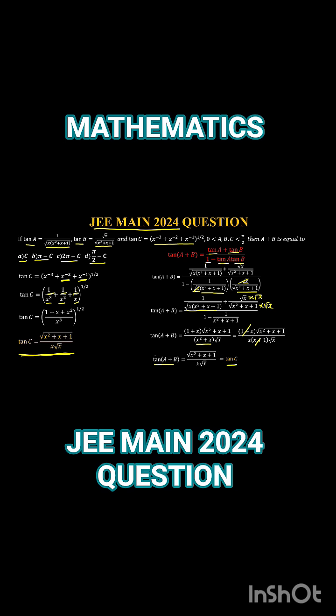Since tan(A + B) = tan C, we get A + B = C + nπ. Here, n = 0 is the only value that satisfies the condition that A, B, and C all lie between 0 and π/2. If n = ±1 or ±2, then A + B would be greater than π, which violates the constraint. Therefore n = 0, and the answer is A + B = C, which is option A.